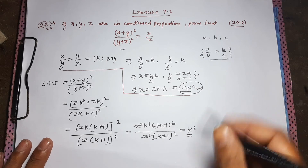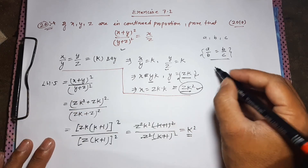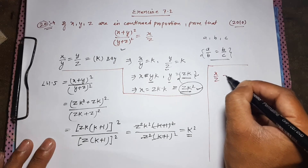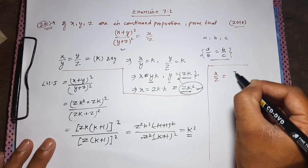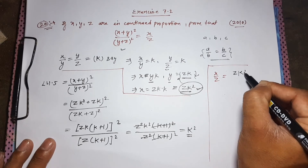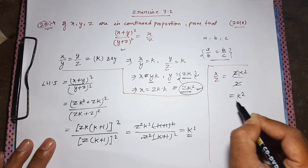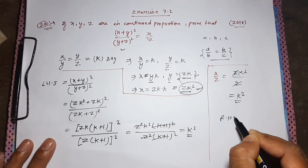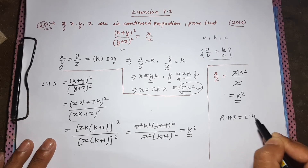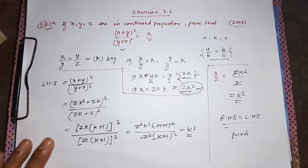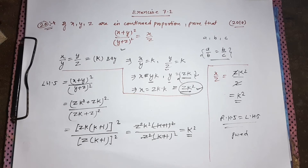For RHS, we have x upon z. Putting x equal to zk squared upon z, the z cancels and we get k squared. So LHS equals RHS equals k squared, and question number 20 is proved.